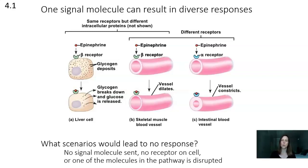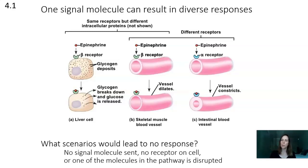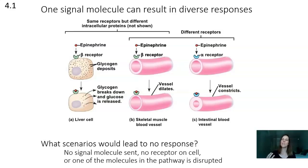In the liver cell and skeletal muscle blood vessel, the same receptors are shown — these are beta receptors — but there are different intracellular proteins. So even with the same signal molecule and same receptor, you can get different responses based on what's happening inside the cell. Comparing the intestinal blood vessel, different receptors picking up the same signal molecule — epinephrine — can also lead to different responses. As for what might result in no response at all: communication could break down at any of those four steps — no signal molecule sent, no receptor on the cell, or a molecule in the pathway within the cell being disrupted.